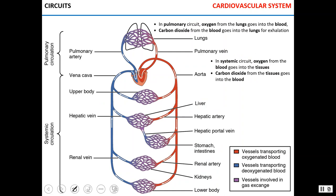There are two circuits in the cardiovascular system: pulmonary and systemic. The pulmonary circuit, shown here, is responsible for the transport of oxygen from the lungs to the heart, which can then deliver oxygenated blood to the tissues. Deoxygenated blood reaches the pulmonary circuit, where oxygen from the lungs goes into the blood while carbon dioxide from the blood goes into the lungs, and we exhale this carbon dioxide.